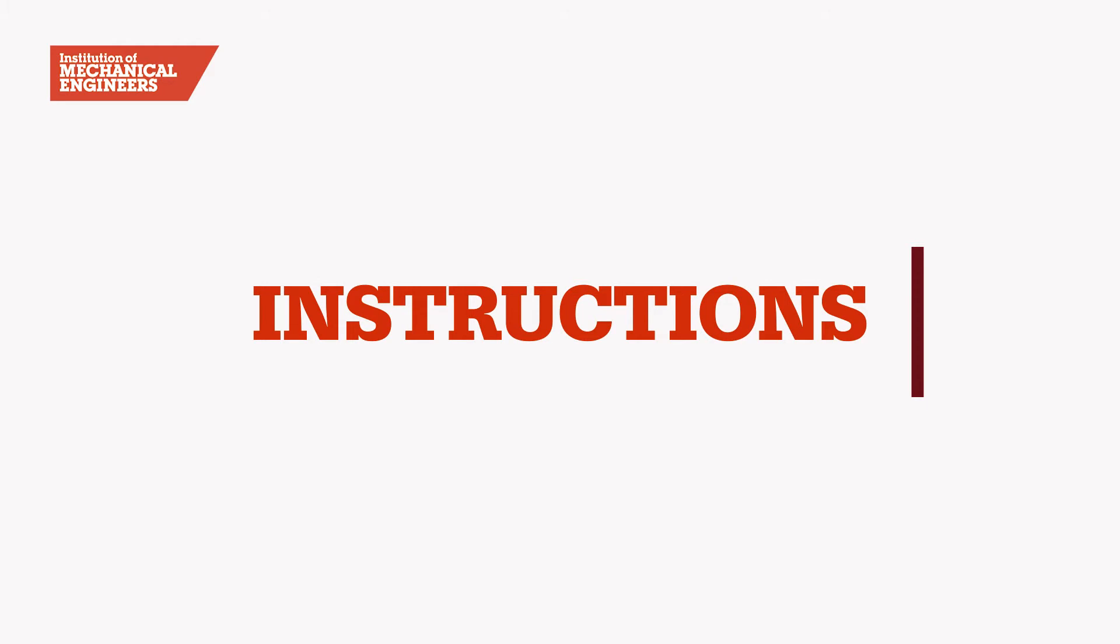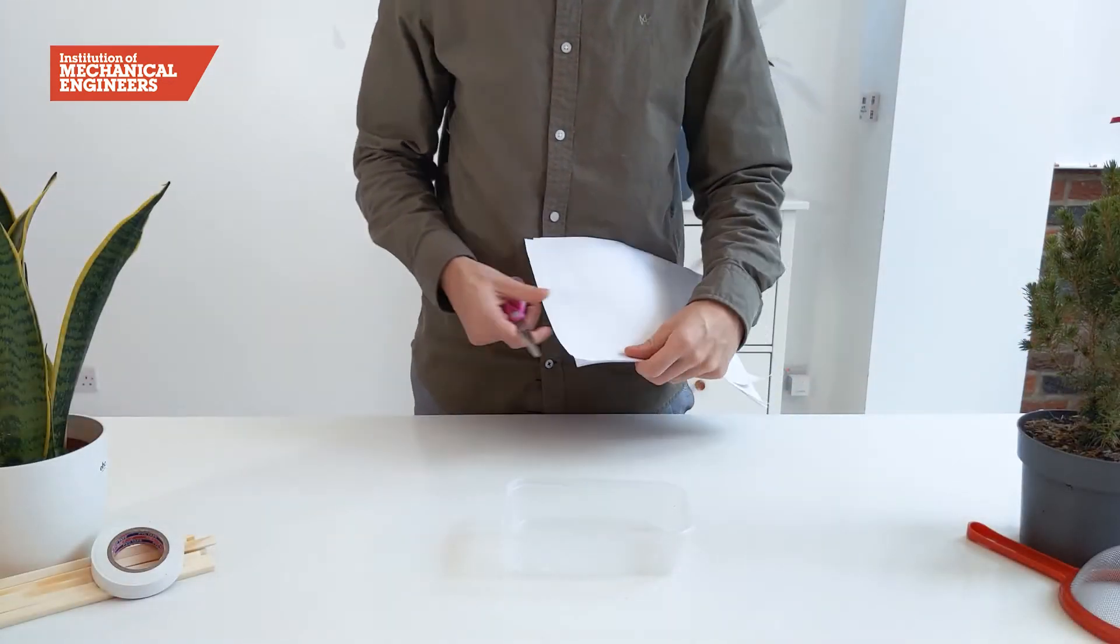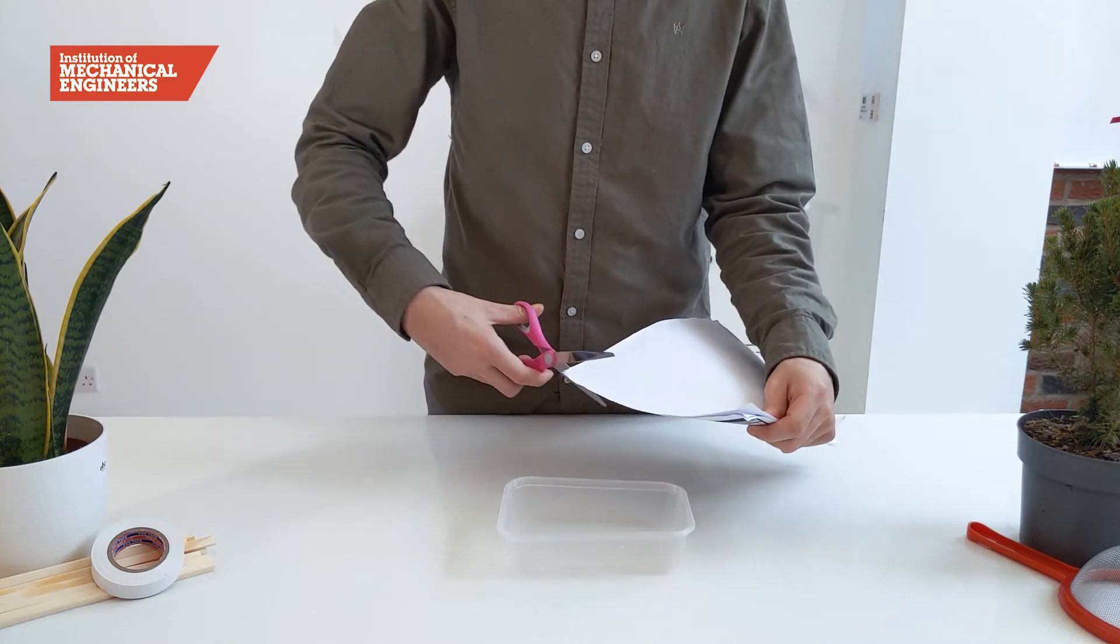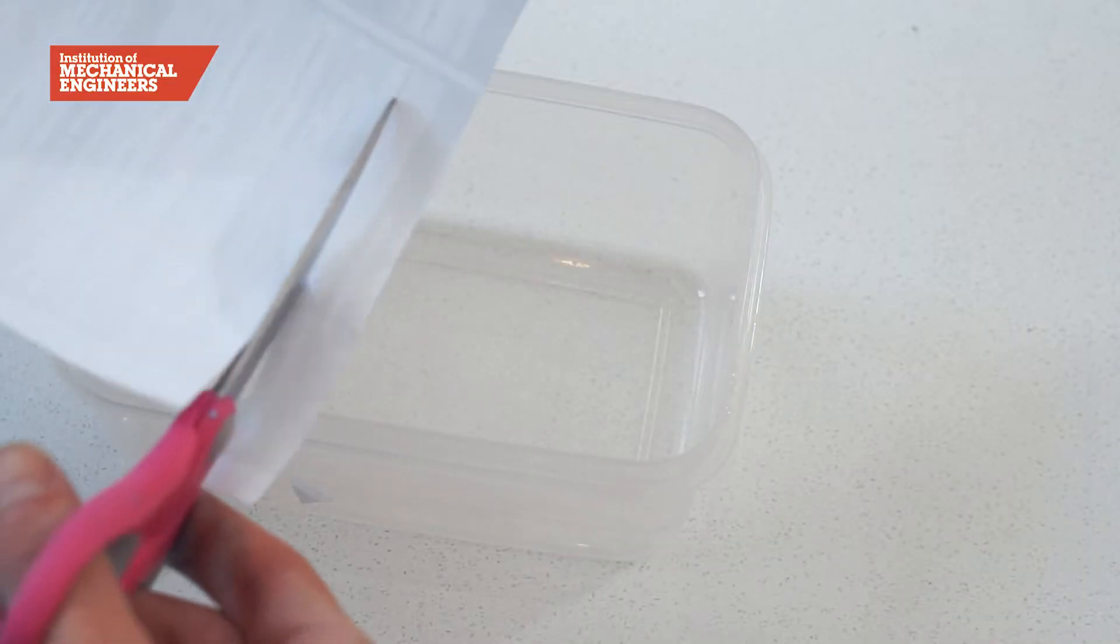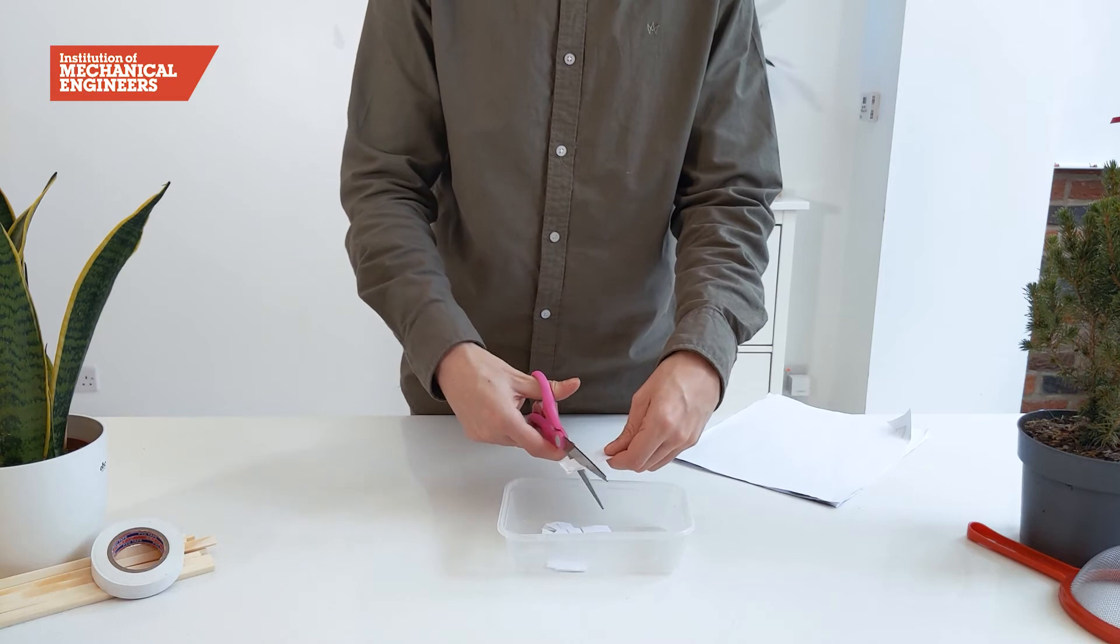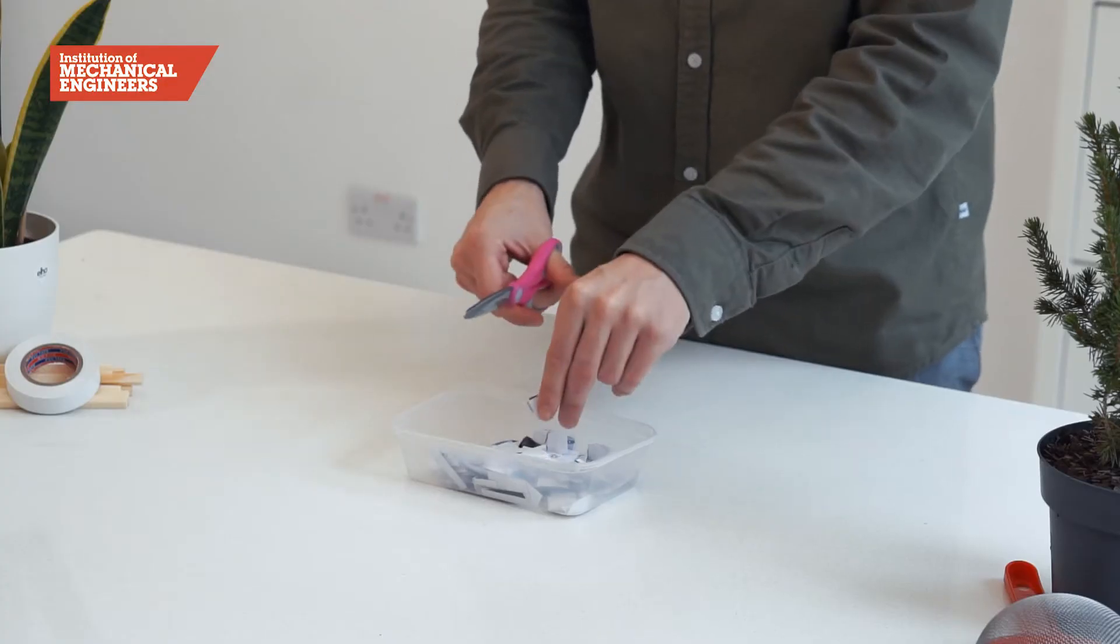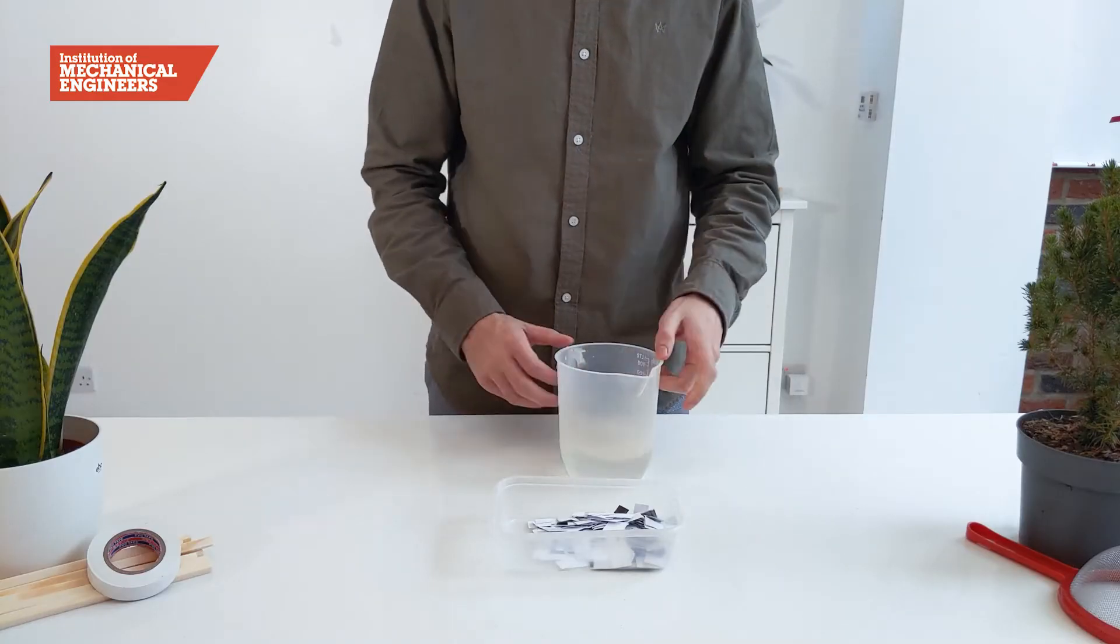Let's get started. First find some used paper that you would like to recycle. Shred it into small pieces, place it in a large bowl or plastic container, cover it with warm water and leave to soak overnight.